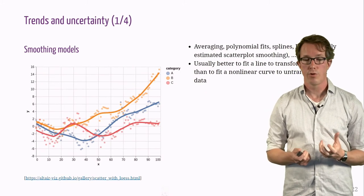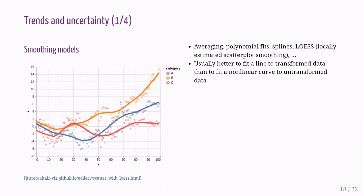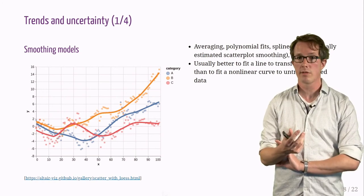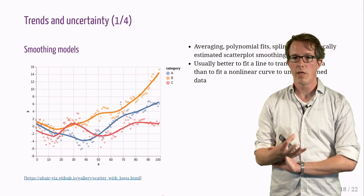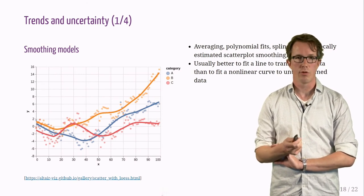Finally, trends and uncertainty. We often represent trends by smoothing lines, and there are a number of smoothing models to visualize trends: averaging, polynomial fits, splines, loess plots. They are very frequent, and many visualization tools can compute these automatically.